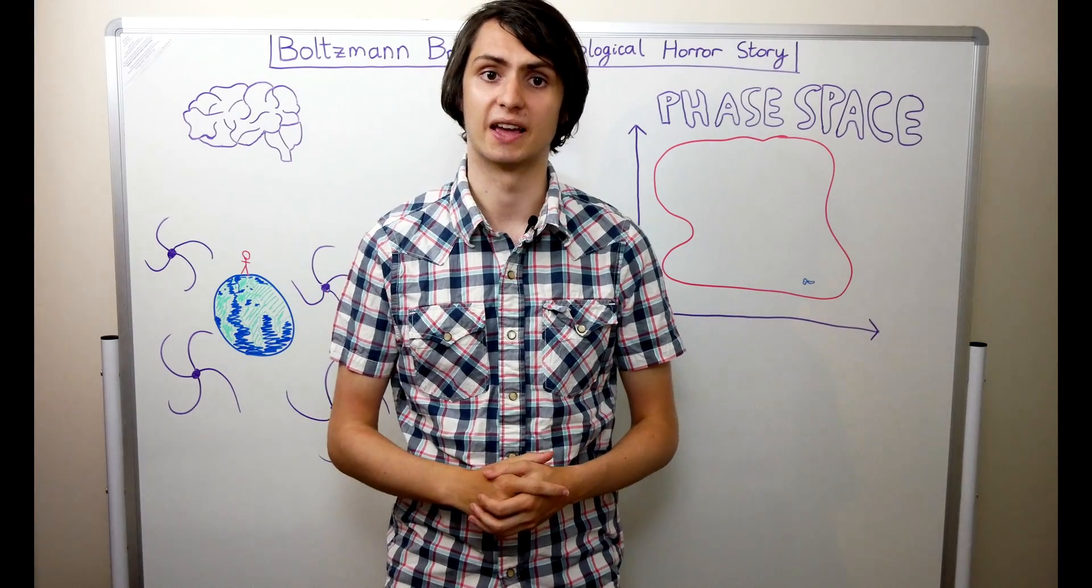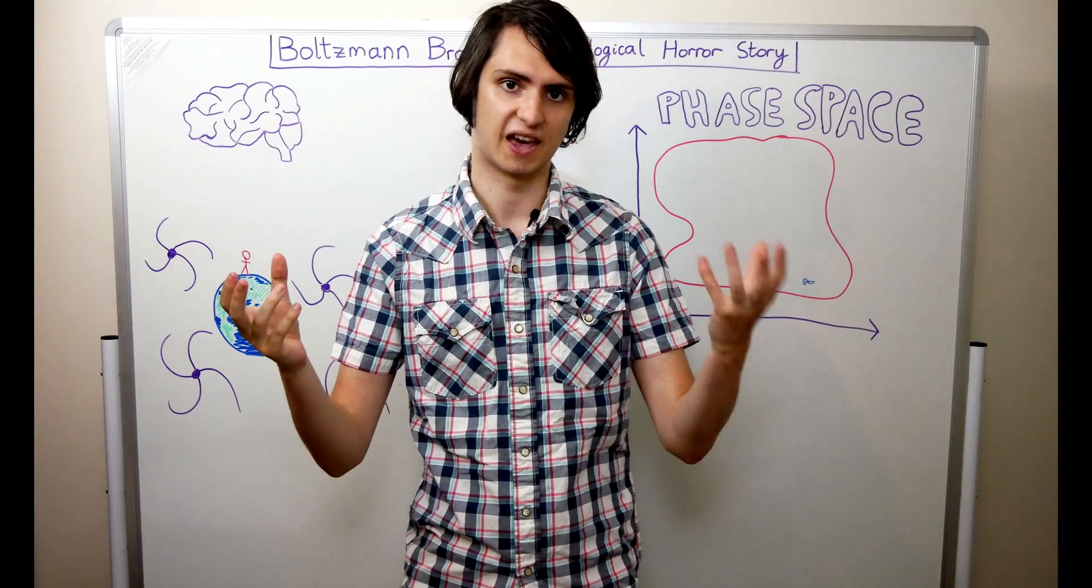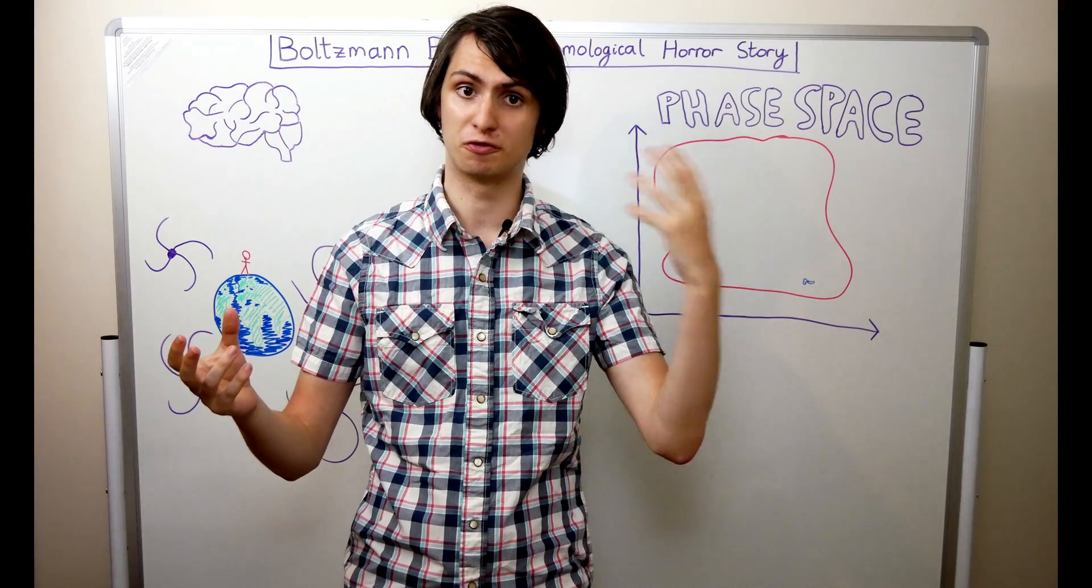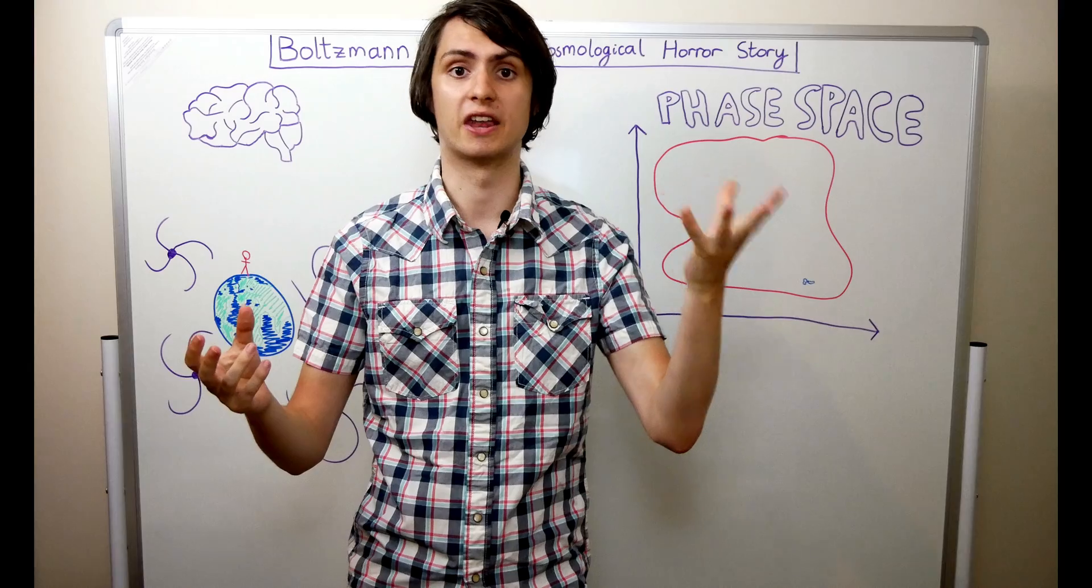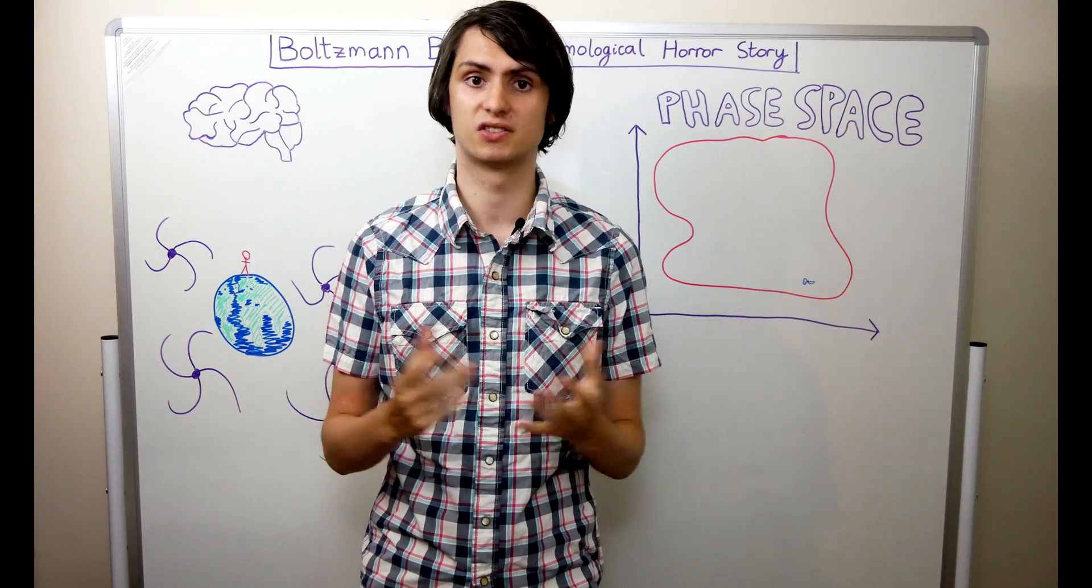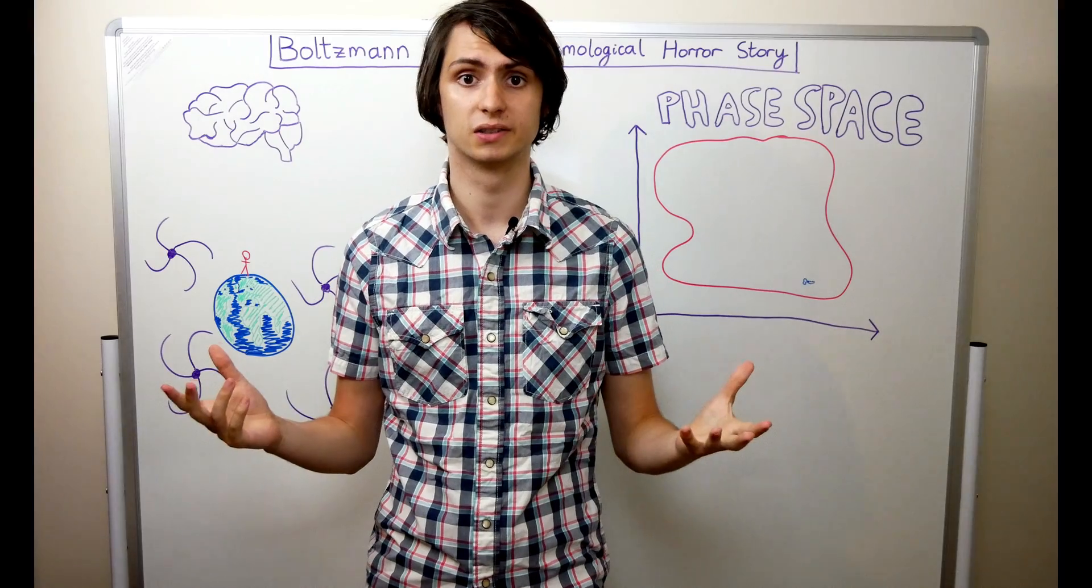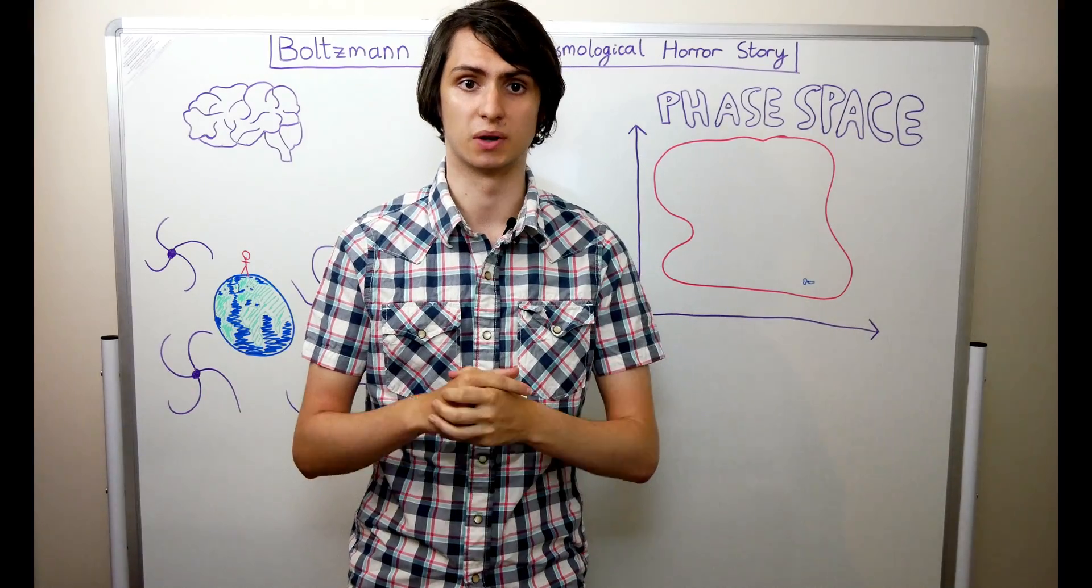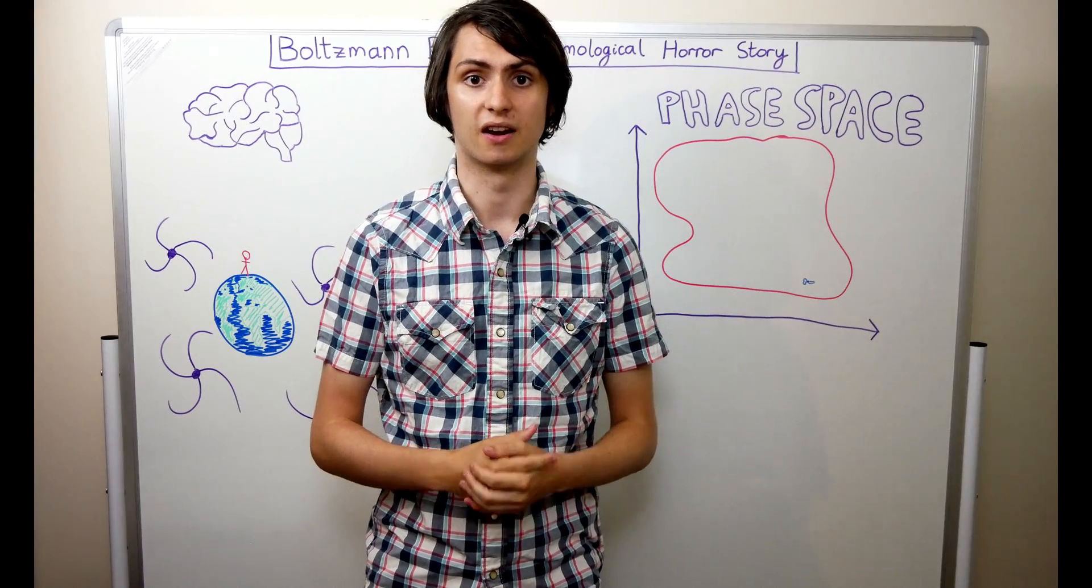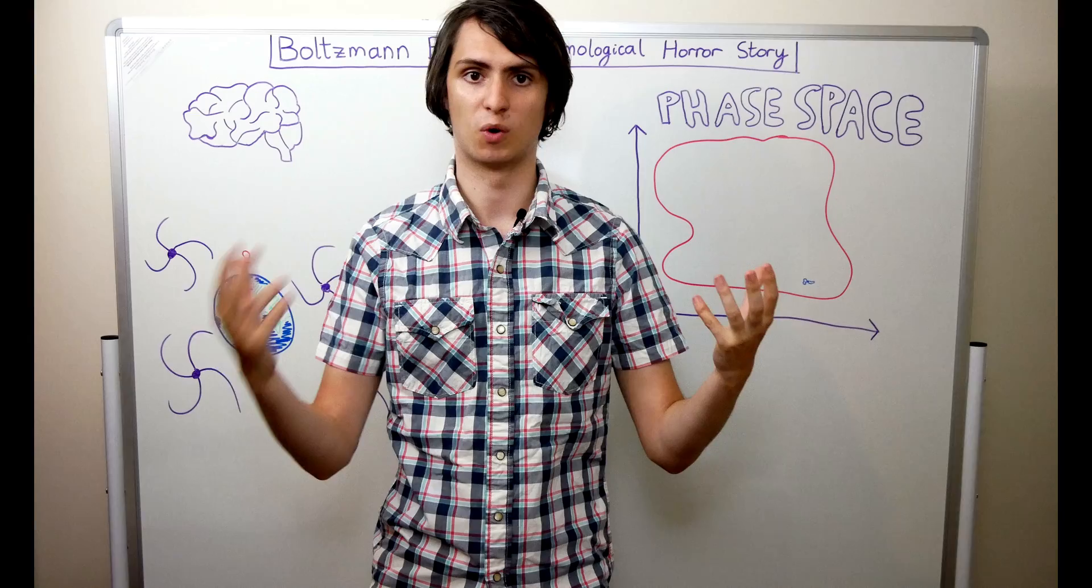In contrast, there are loads of ways of arranging these particles such that you end up with a disorderly, high-entropy state instead. Think of the difference between a sandcastle and a lump of sand. There are far more ways of arranging grains of sand such that you end up with a featureless hill than those that end up as a sandcastle. This observation explains why the second law of thermodynamics works. Entropy always appears to increase because it's far more likely that a system will end up in a high-entropy configuration than in a low-entropy one.